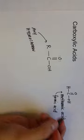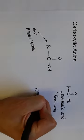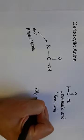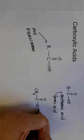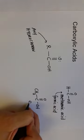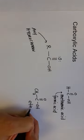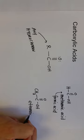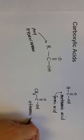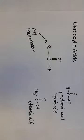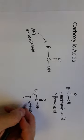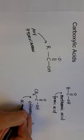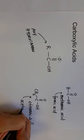If we have two carbons — CH3COOH — this would be ethanoic acid because that's two carbons. This also has a common name: acetic acid.